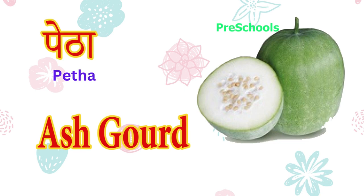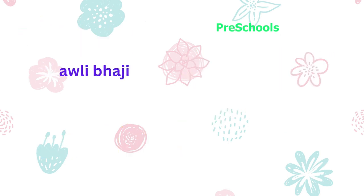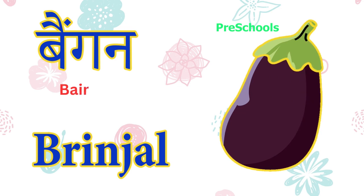Peta — ash gourd. Chowli bhaji — amaranth leaves. Bhaengan — brinjal.